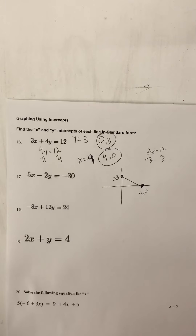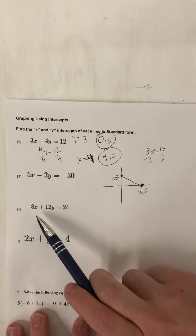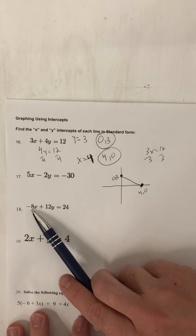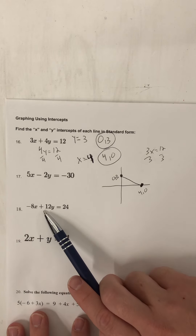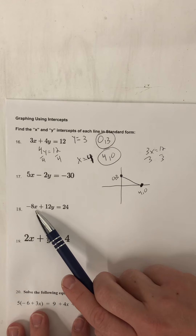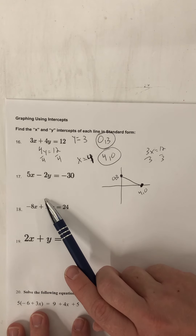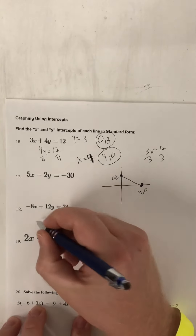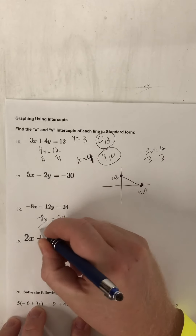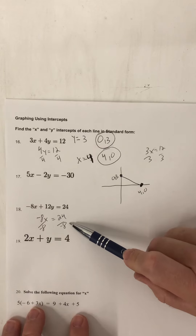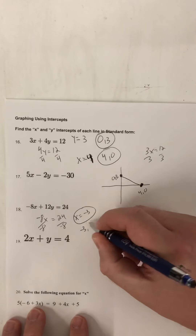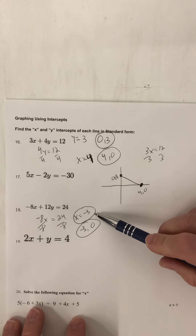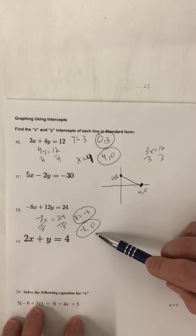When you guys do this on your own for homework in preparation for Thursday's test, just know that the rules of negative numbers still apply. For example, for number 18 we have negative 8x plus 12y equals 24. To find the x-intercept, plug in zero for y — the 12y goes away. Positive 24 divided by negative 8 is negative 3. So for number 18, my x-intercept is (negative 3, 0) — please don't put positive 3, that would be wrong.